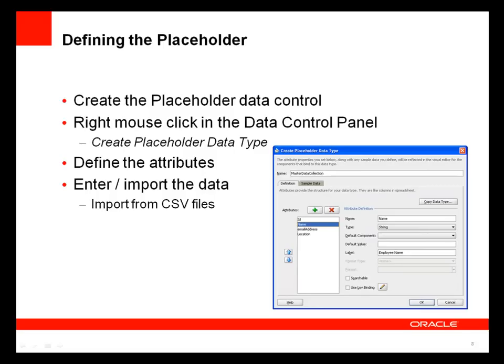To define the placeholder data control, you right-click in the data control panel and choose Create Placeholder Data Type. You can then define the attributes you'll be using and have the option to enter or import data from CSV files or spreadsheets saved as CSV. This also gives the visual editor a clue as to which types of UI components to build — if you drag an attribute of type string onto the page, you'll get string input components; if it's a date, you'll see the date picker; if it's a list, you'll see radio buttons, check boxes, and combo boxes.